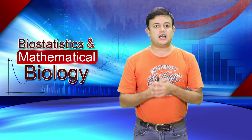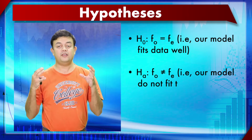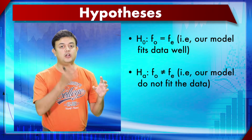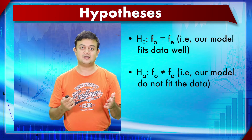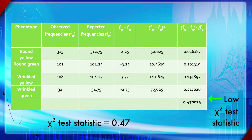For this goodness of fit test, the null hypothesis is fo equals fe — the model fits the data well. The alternative hypothesis is fo does not equal fe — the model does not fit the data. It is a two-tailed test because of the equality sign in the null hypothesis. Calculating systematically, the chi-square test statistic obtained is 0.47.